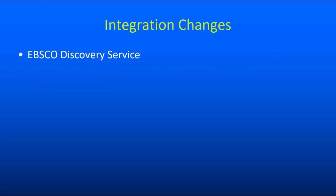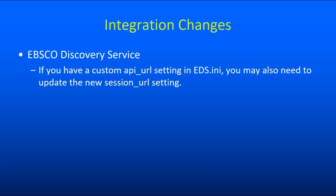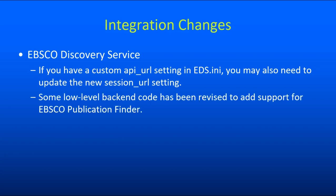We've also made a few changes to integrations with external services. For EBSCO Discovery Service, a new configuration setting has been added to EDS.ini so that it uses separate URLs for accessing the API and establishing new sessions. In most cases these values are the same, but there are some situations where they need to be different. So if you've customized the API URL setting in your EDS.ini, you might need to look at the session URL setting as well and make it match. Additionally, when the EBSCO Publication Finder backend was added, it utilized some EDS code and led to a bit of refactoring, so if you have low-level custom EDS code, you might want to review the changes.